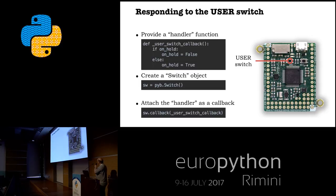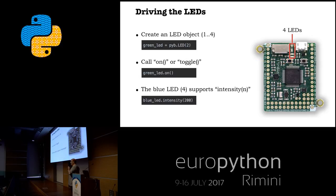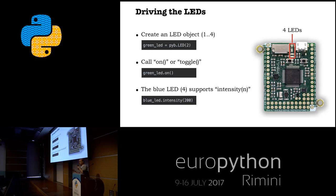Driving the LEDs — well, that's pretty cool. The board has four LEDs in four colors. Much like the switch, you create an LED object and can switch them on, off, or toggle them. For example, Pyboard LED 2 for the green LED. LED 4 supports an intensity method allowing 256 levels of brightness. They all support the intensity call, but only the blue LED allows the cool throbbing type of effect.